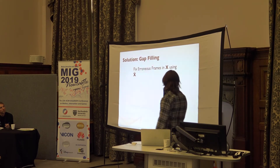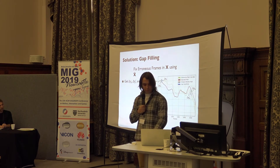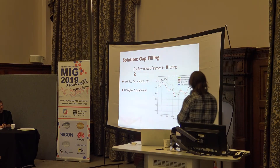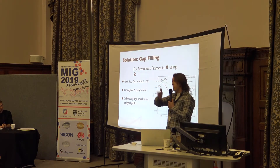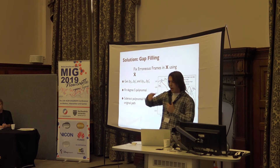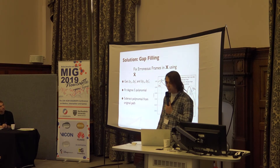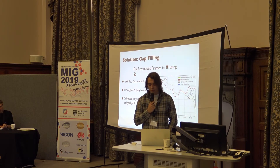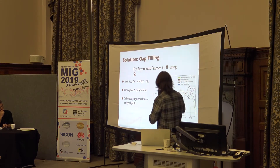The next point is gap filling. Once we've reconstructed the markers and determined which intervals are incorrect, we want to fill those intervals. We look at a gap: we determine the start frame and end frame of the gap, get the difference in positions and velocities between the reference path and original path, and fit a degree-5 polynomial. We have four constraints and use degree 5, then subtract this polynomial from the reference path to generate the blended path.